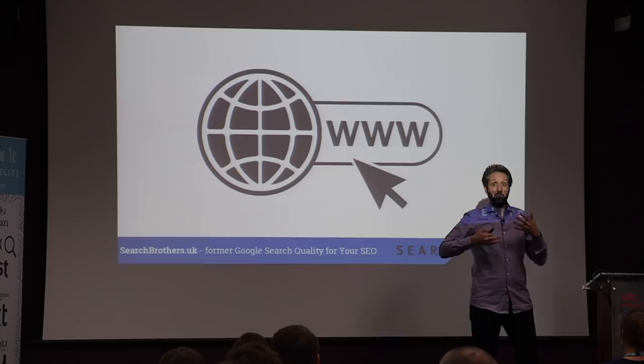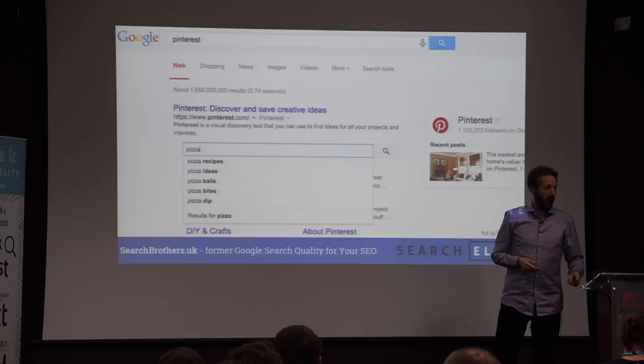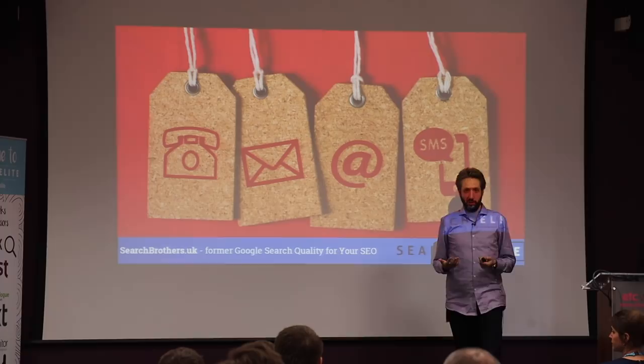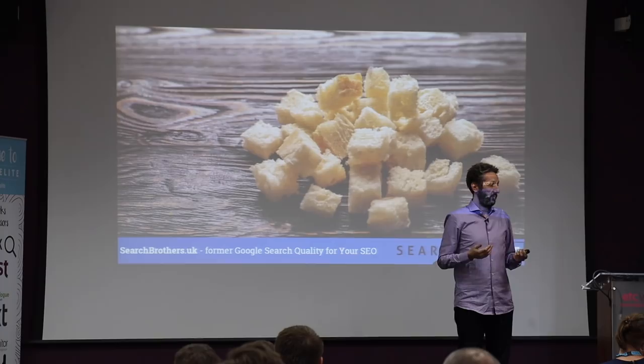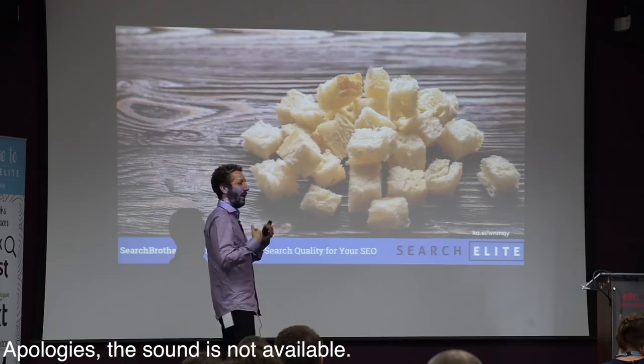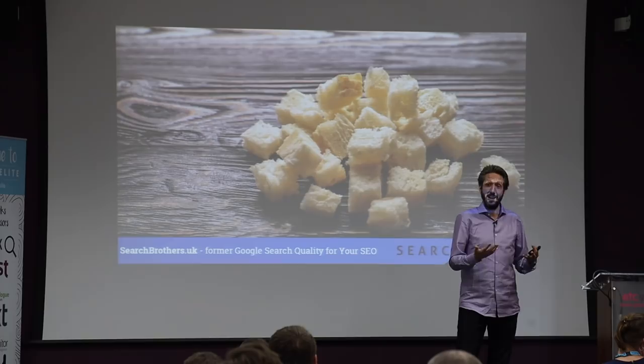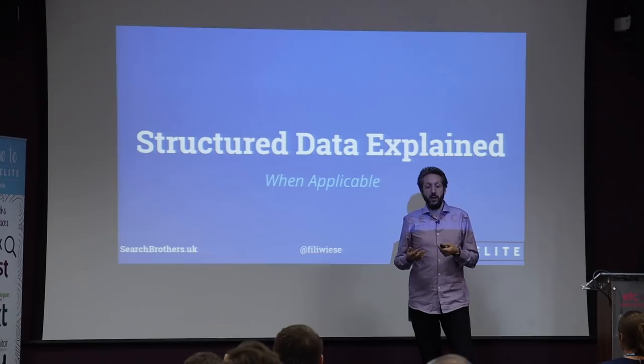What are some of the schemas that we should implement as a bare minimum on any website? The website schema, with the search action schema, with the organizational schema, local business schema, with the contact point schema. These are some of the schemas that we should have on basically every website just to get started. And the breadcrumb schema — this one is actually quite important. It can nicely replace the URLs within the search results, and they tend to have, no guarantee, a slightly higher click-through rate.